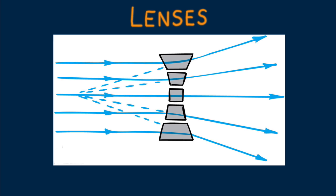Here's a different arrangement. The middle is thinner than the edges and it diverges the light. Such a lens is called a diverging lens. Note that the prisms diverge the incident rays in a way that makes them appear to come from a single point in front of the lens.